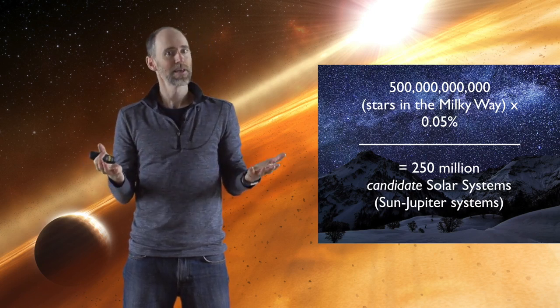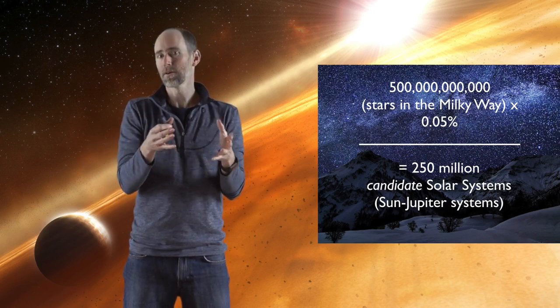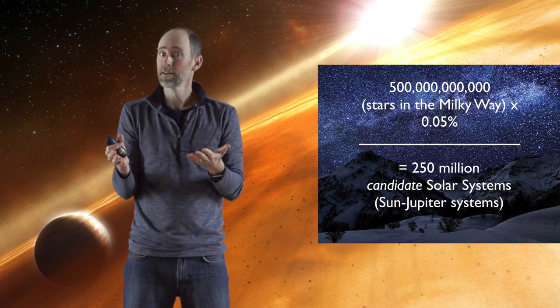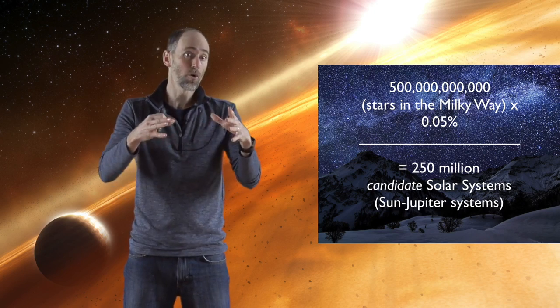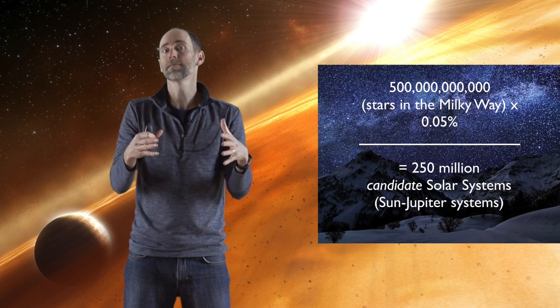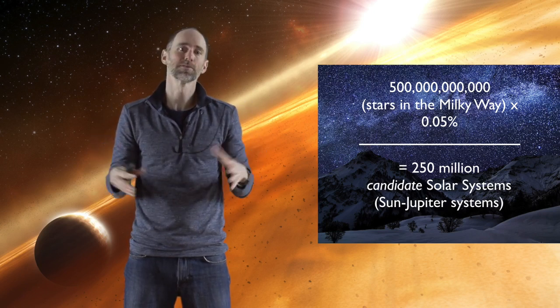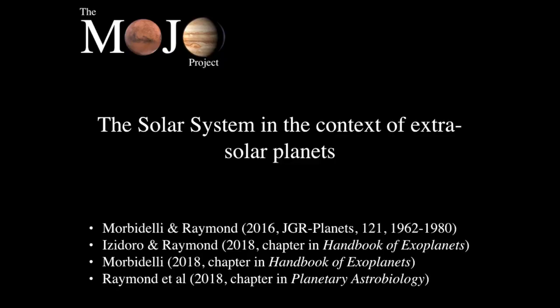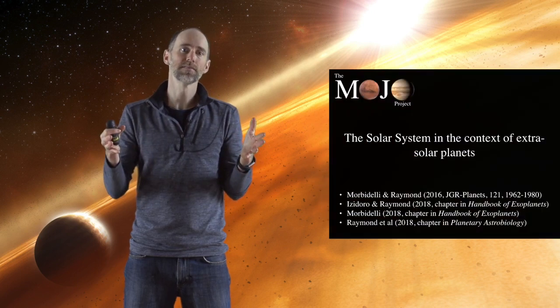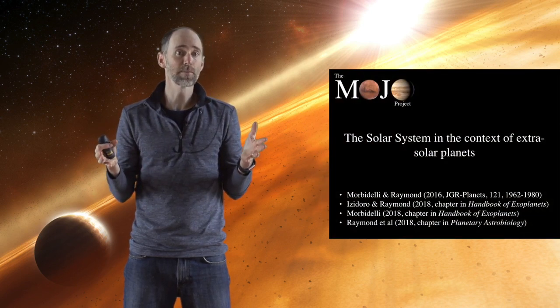At the same time, certain characteristics could be more common. The occurrence of planets on orbits like Earth's - there may be many more of those than Sun-Jupiter systems. Putting all those together is a whole other thing. Finally, the MOJO project's contribution to this study is that we've written several reviews to put the solar system in the context of extrasolar planets, particularly from the point of view of planet formation.